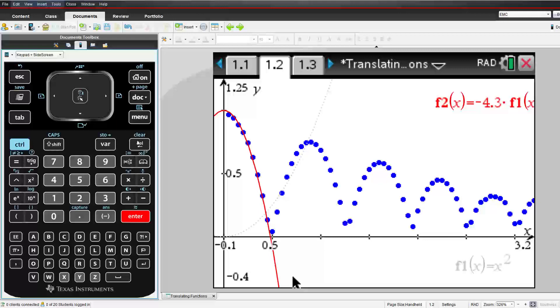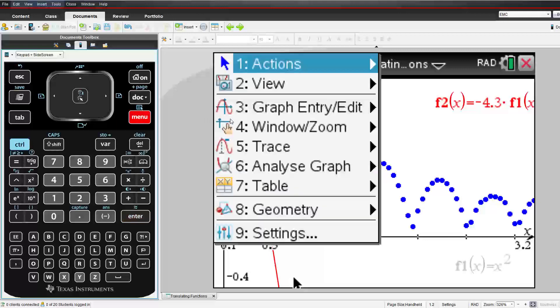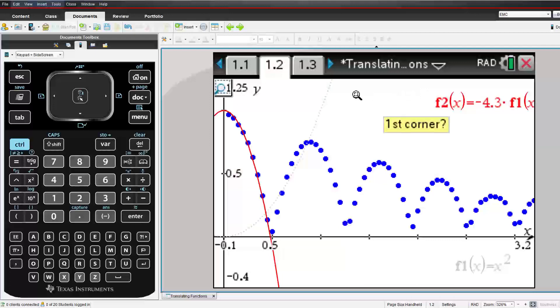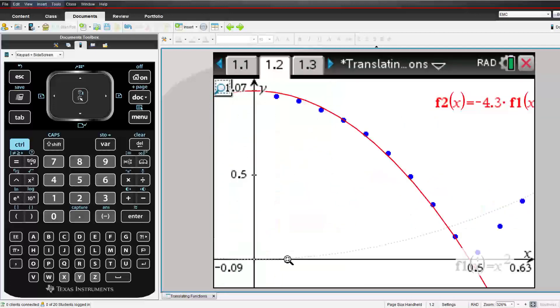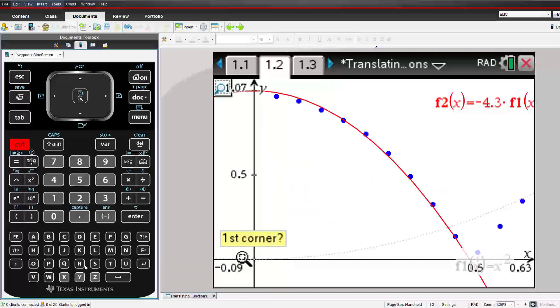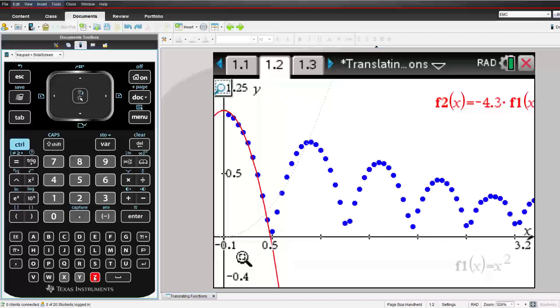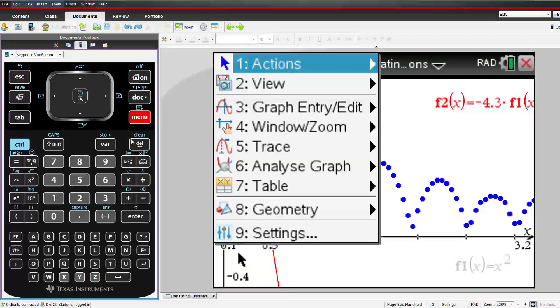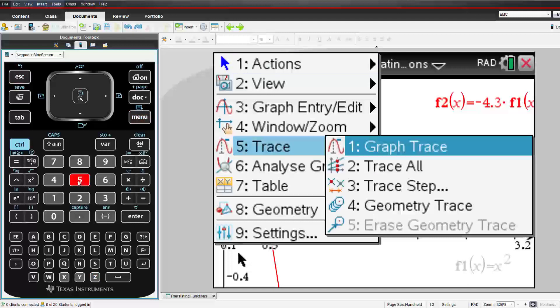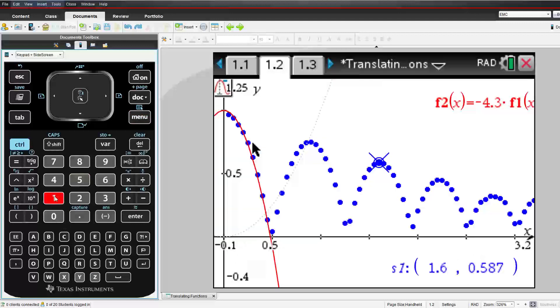Students can check how closely their function models the data by using the zoom box option. Once students are happy with how well their function and transformations model the first ball bounce, they proceed to the second and subsequent ball bounces. The subsequent ball bounces provide the repetition required to help students remember the effect that each parameter has on the primitive function.